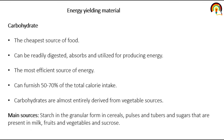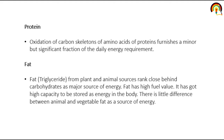Carbohydrate is the main source of energy — the cheapest source of food, readily digested, absorbed, and utilized for producing energy, making it the most efficient energy source. Carbohydrate is entirely derived from vegetable sources; main sources include starch in granular form in cereals, pulses, and tubers, and sugars present in milk, fruits, vegetables, and sucrose. Protein oxidation of the carbon skeleton of amino acids furnishes a minor but significant fraction of the daily energy requirement.